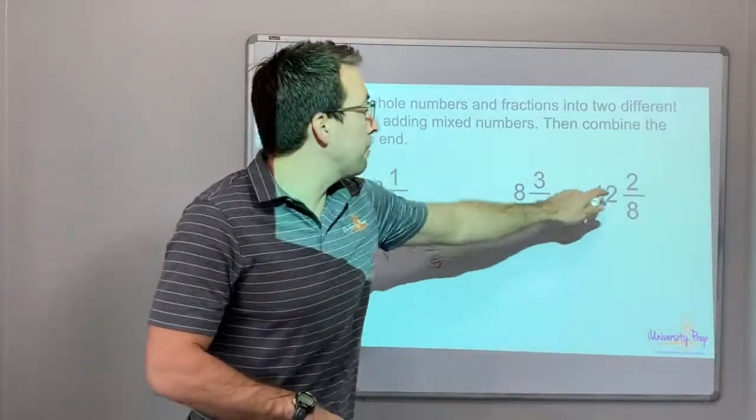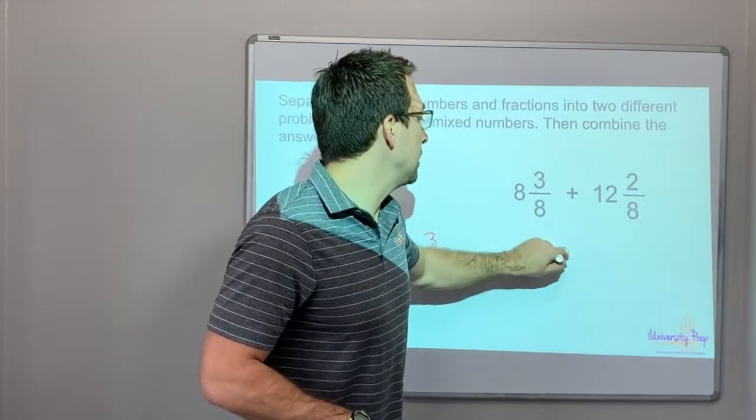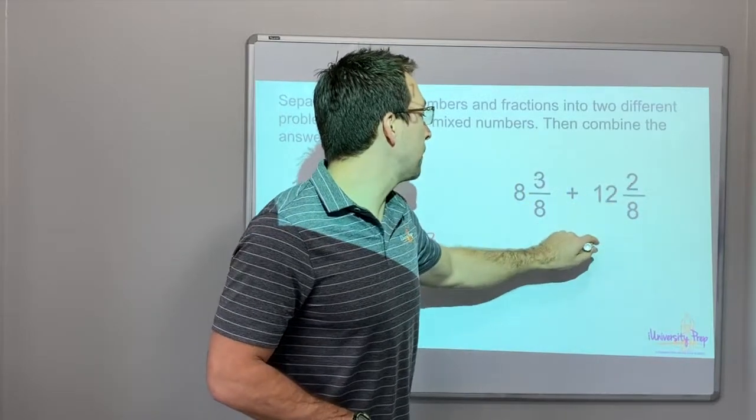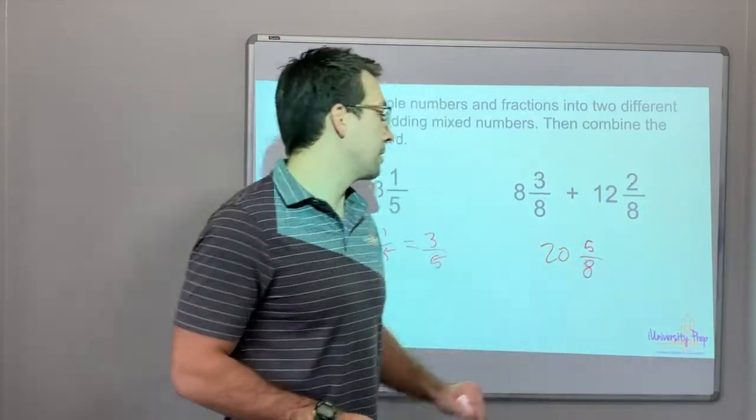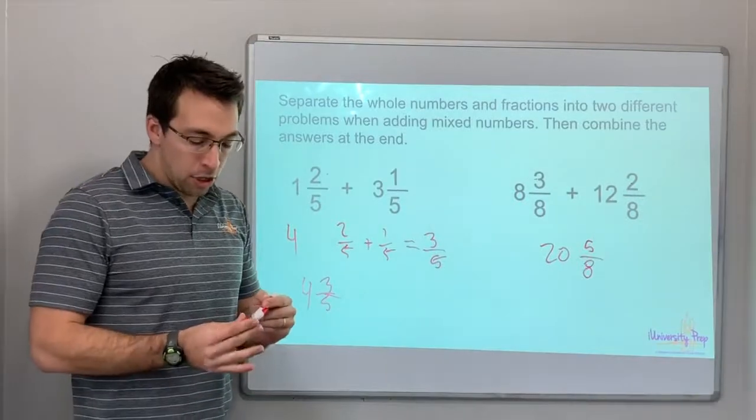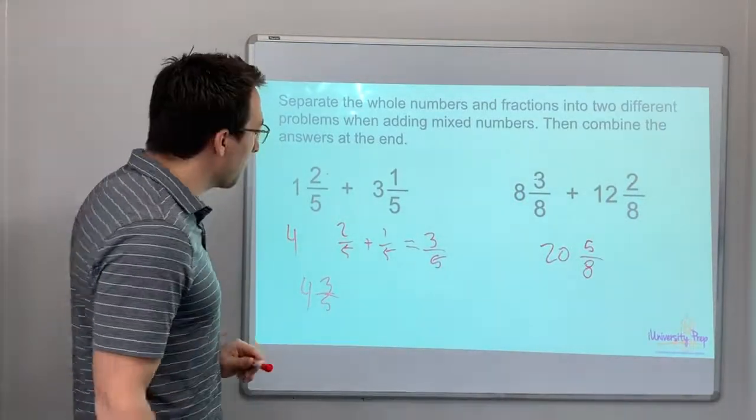Fairly simple. 8 plus 12 is 20, 3 plus 2 is 5, 20 and 5/8. Okay, so let's do the first two problems. Pretty simple.